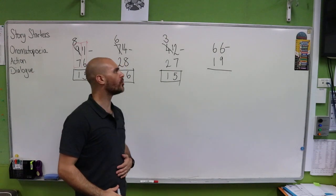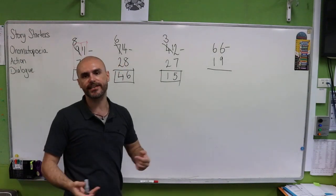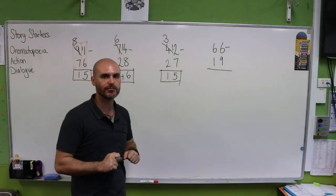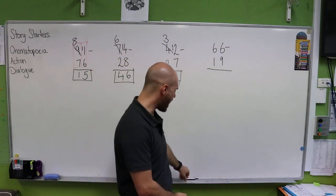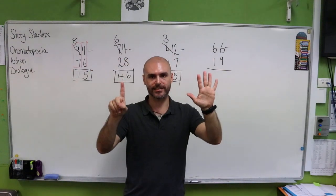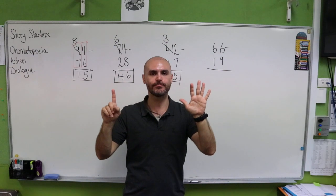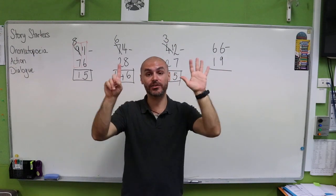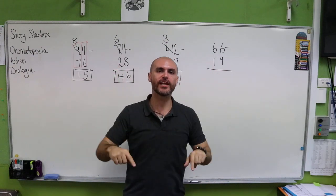Our last number that we have on the board, we have 66 take away 19. Now if I have six, can I get nine out of that? No, I can't because six is a smaller number than nine.